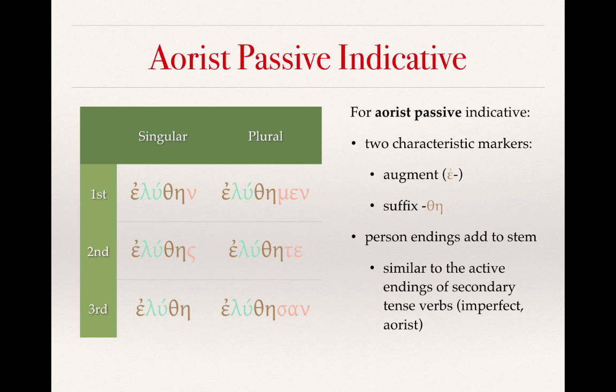You'll notice as well that there is no connecting vowel. The personal endings are added right on to the theta-eta. And in the case of the third singular, you'll notice there is no definitive personal ending marking it as the third singular. So if you see a verb with just the theta-eta at the end, you can be fairly confident that you have an aorist passive indicative third singular.